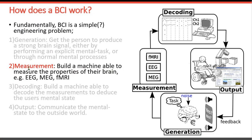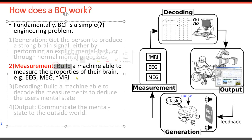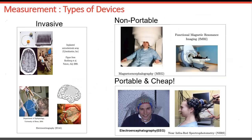Now let's review measurement technologies — devices that allow us to acquire different types of brain signals such as EEG, MEG, and fMRI. These devices can be classified as invasive or non-invasive, portable or non-portable, expensive or cheap. Invasive methods involve implanting electrodes inside the skull — on top of the brain or deep inside it. This basically involves opening up the skull and placing sensors directly on the brain, requiring surgery.